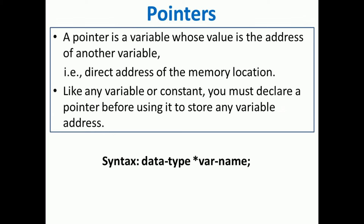What is a pointer? A pointer is a variable whose value is the address of another variable. Till now we saw different variables — we declare a variable to store a particular value. But a pointer is again a variable; however, it is not going to store the value, it is going to store the address of another variable. This is something different.